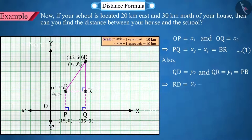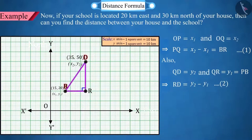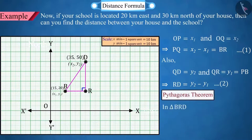Hence, RD will be equal to y2 minus y1. So, in triangle BRD, using the Pythagoras Theorem,